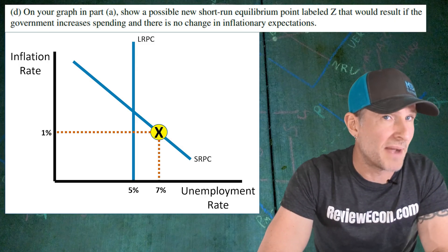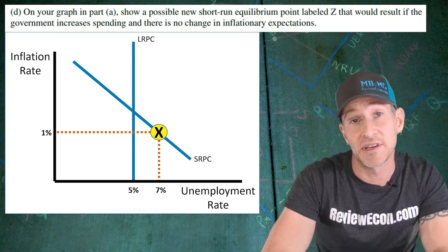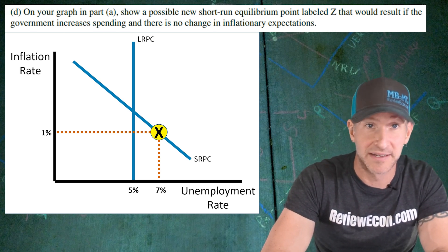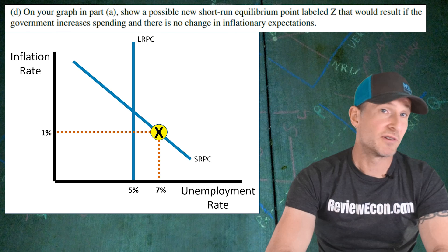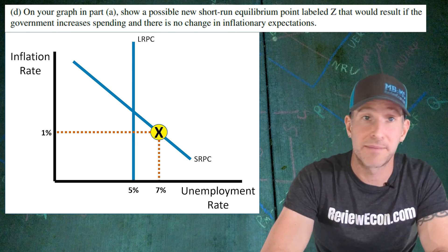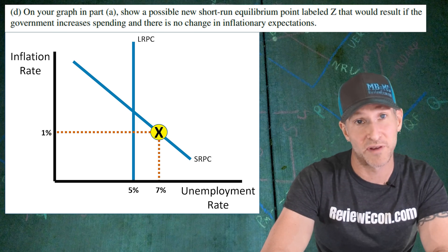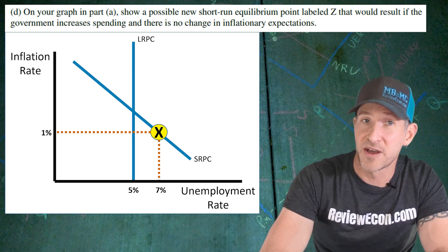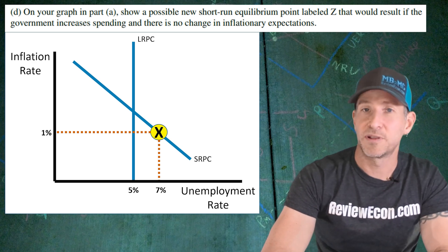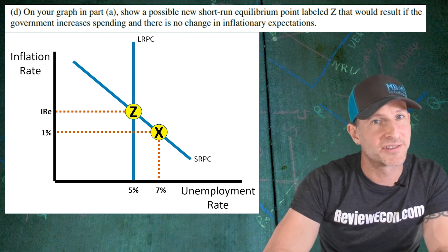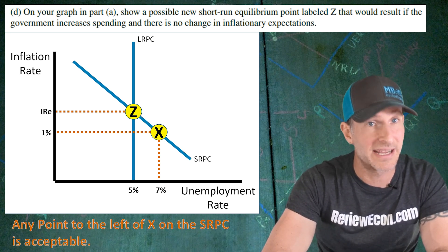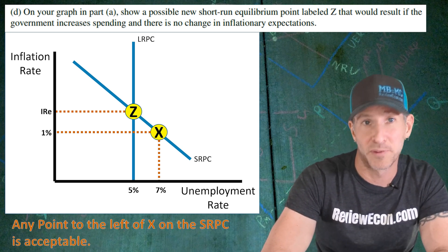For part D, we're going back to the graph we already drew in part A and showing the new short-run equilibrium that would result from the change in government spending, labeling that point Z. We just saw a rightward shift of aggregate demand. In the AS-AD model, that means movement up and to the right on the short-run aggregate supply curve. On the Phillips curve model, that's movement up the short-run Phillips curve but to the left. Plot a new point higher up on that short-run Phillips curve and label it point Z — it just needs to be higher up than point X.